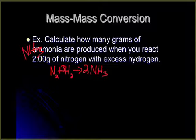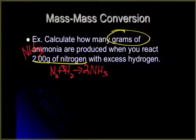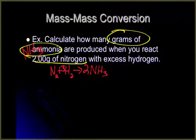Let's see what we know and what we don't know from our question. What is given to us in the problem? How many grams of ammonia are produced when you react two grams of nitrogen? So we are starting with two grams of nitrogen and we want grams of ammonia.